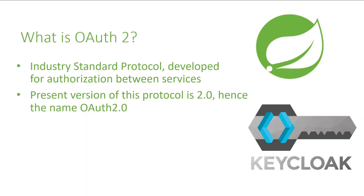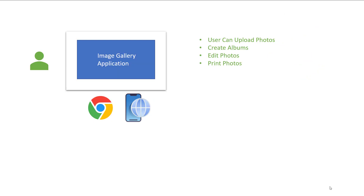What is OAuth2? The term OAuth stands for open authorization, and it's an industry standard protocol developed for authorization between services or applications. This protocol is right now in version 2.0, which is why it's usually known as OAuth2. To understand this better, consider an image gallery application whose functionality is simple: the user uploads a photo, can apply different filters and frames, and can also print these photos.